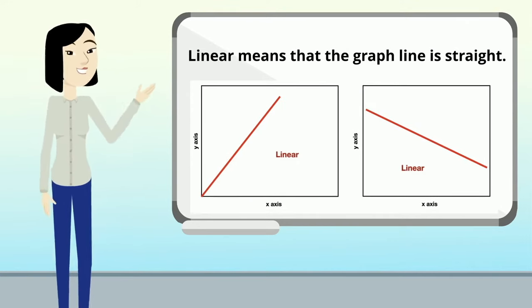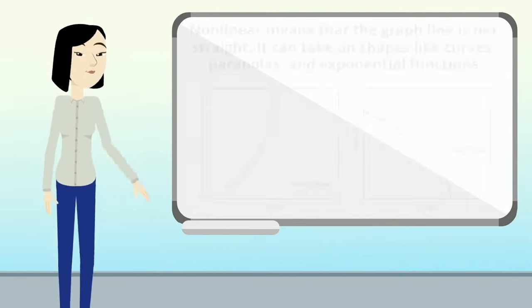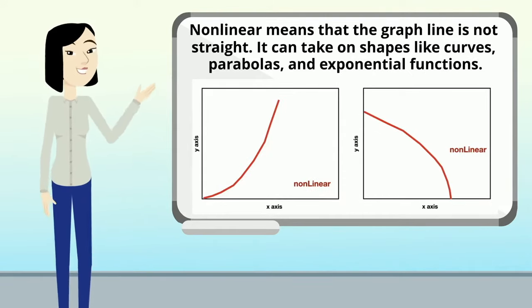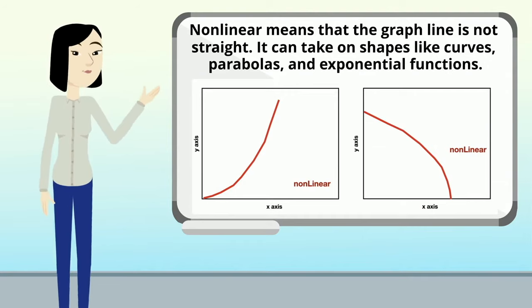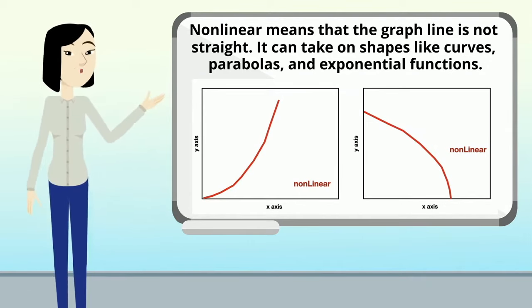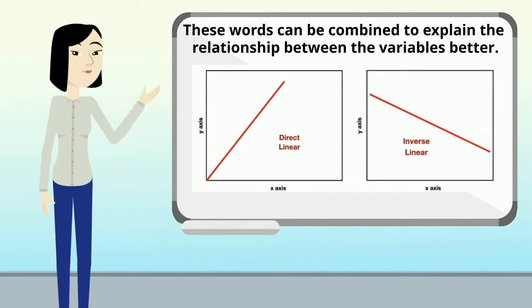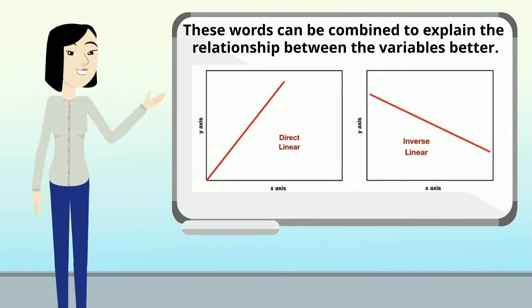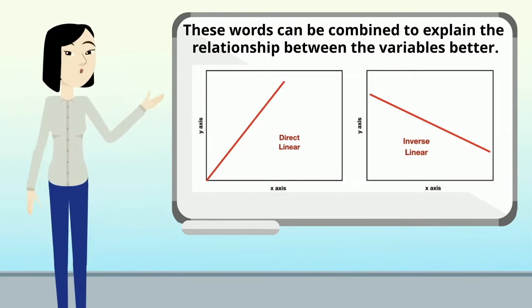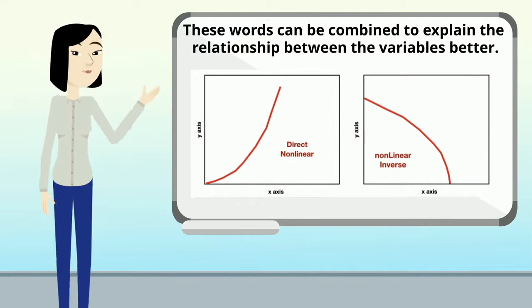Linear means that the graph line is straight, and it also represents proportional relationships. Non-linear means that the graph line is not straight — it can take on shapes like curves, parabolas, and exponential functions. These words can be combined to explain the relationship between the variables better, like direct linear and inverse linear, or direct non-linear and non-linear inverse.